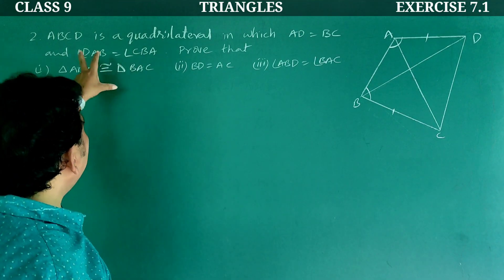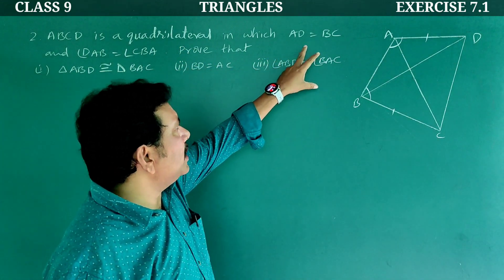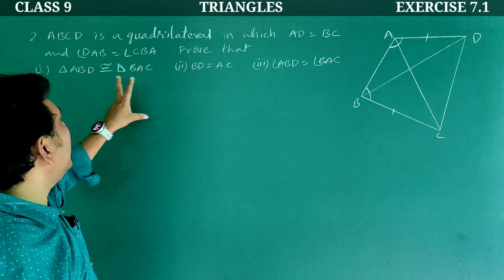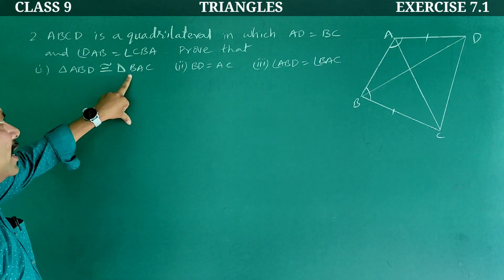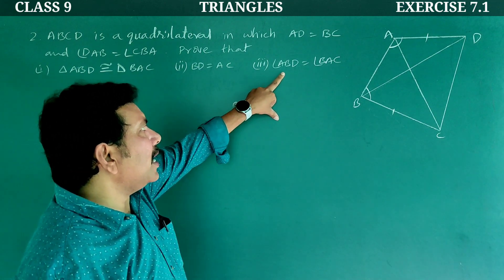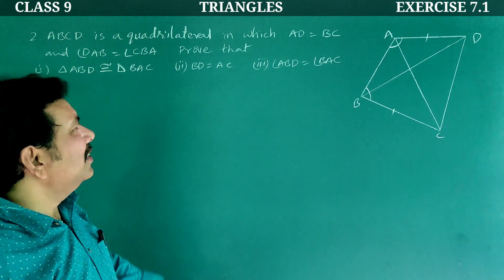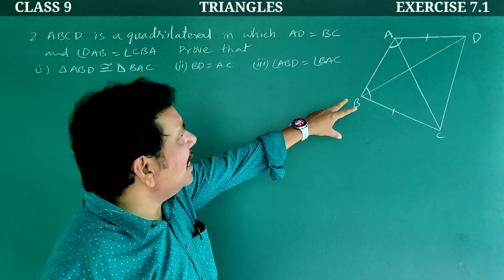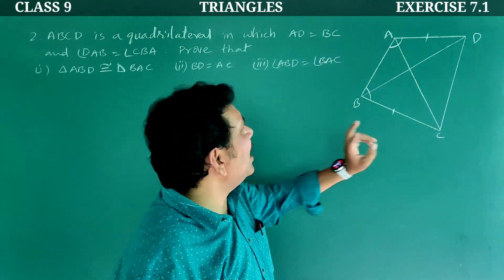Next, second question. ABCD is a quadrilateral in which AD is equal to BC and angle DAB is equal to angle CBA. Prove that: first, triangle ABD is congruent to triangle BAC; second, BD is equal to AC; and third, angle ABD is equal to angle BAC. ABCD is a quadrilateral. AD is equal to BC as given.